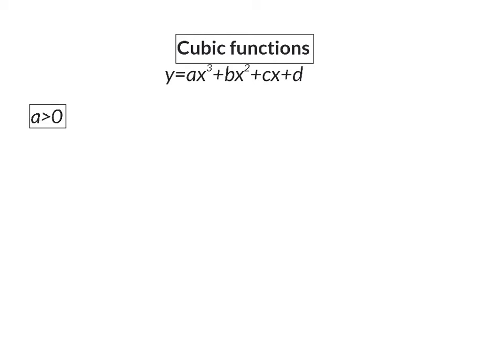If the a value is bigger than zero or positive, the form of the graph will have two options. The graph can have two stationary points and will look something like this, or it can have only one stationary point which will also be the inflection point. When a is positive you always start bottom left and move to the top right.